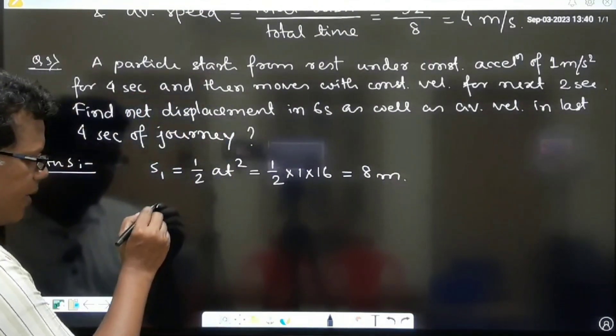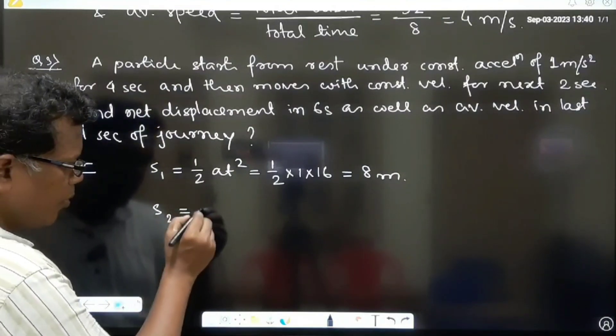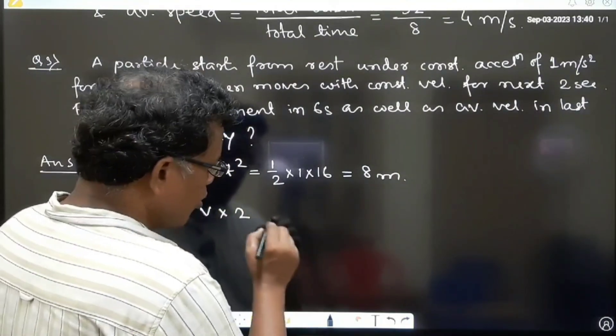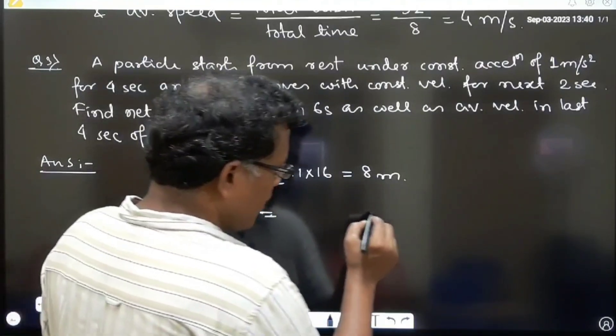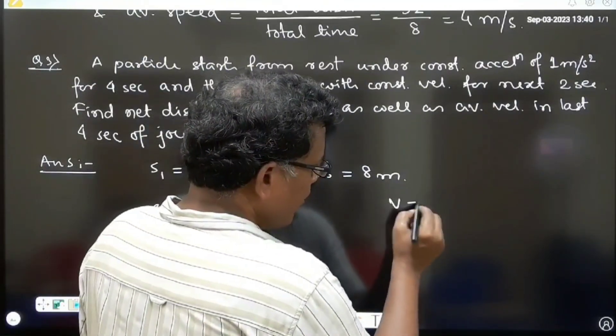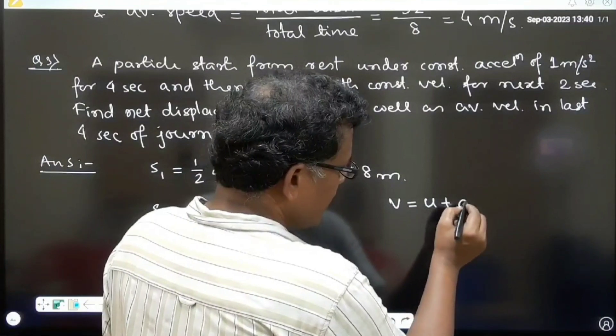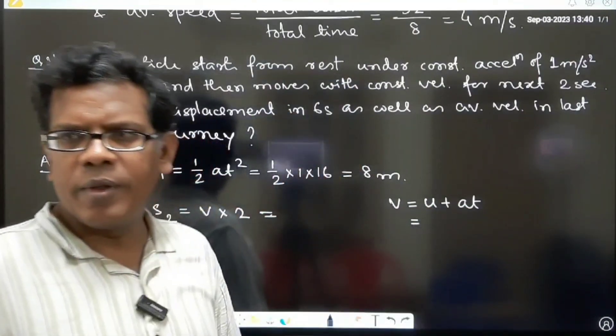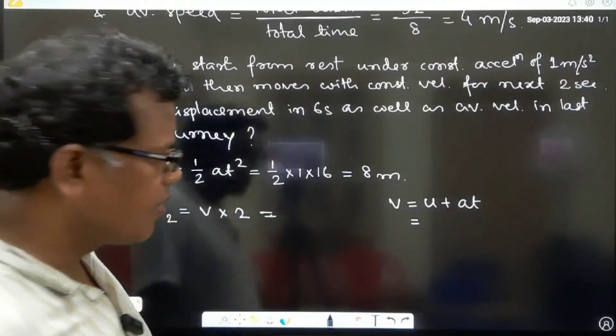And then S2. S2 will be the constant velocity into 2. Now question arises, this calculation we can do. V can be written U plus at. The final velocity at the 4th second will be the constant velocity for the last 2 second of the journey.